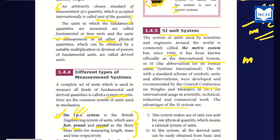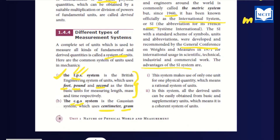In the SI system, let's see what the advantages are. First: this system makes use of only one unit for one physical quantity, which means it is a rational system of units. For example, length is measured in meters — we can measure and convert lengths in meters.